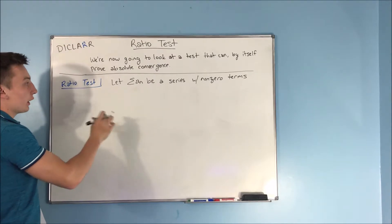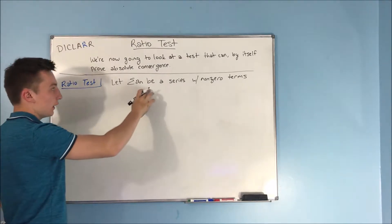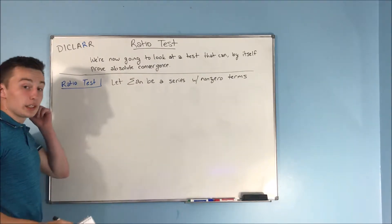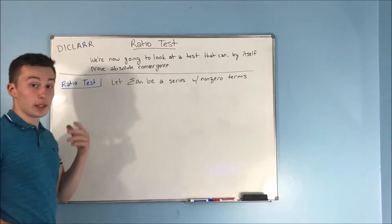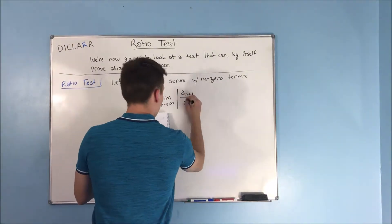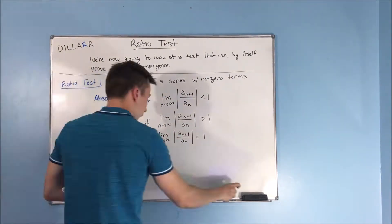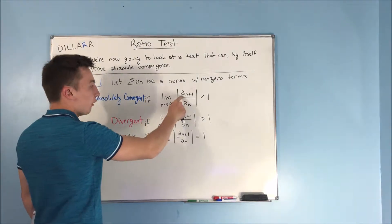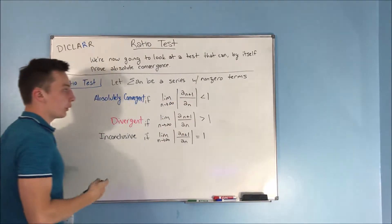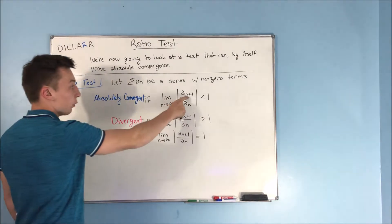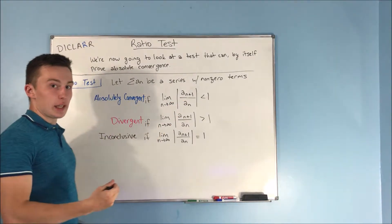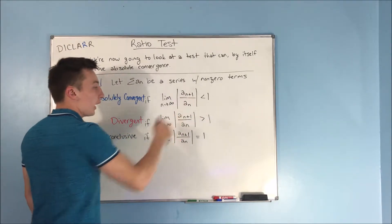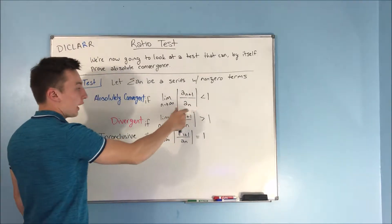So what you're going to have is let the sum, or the series a sub n, be a series with non-zero terms. And here is what the ratio test says: if you take the limit as n approaches infinity of a sub n plus one, so now you're just plugging in n plus one for your series instead of n, you put it over a sub n, and take the absolute value of that.